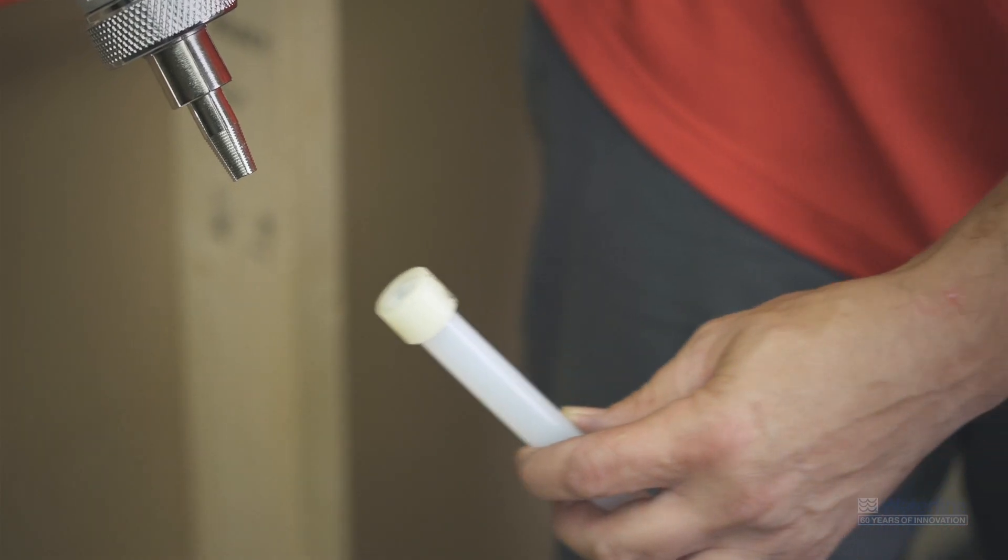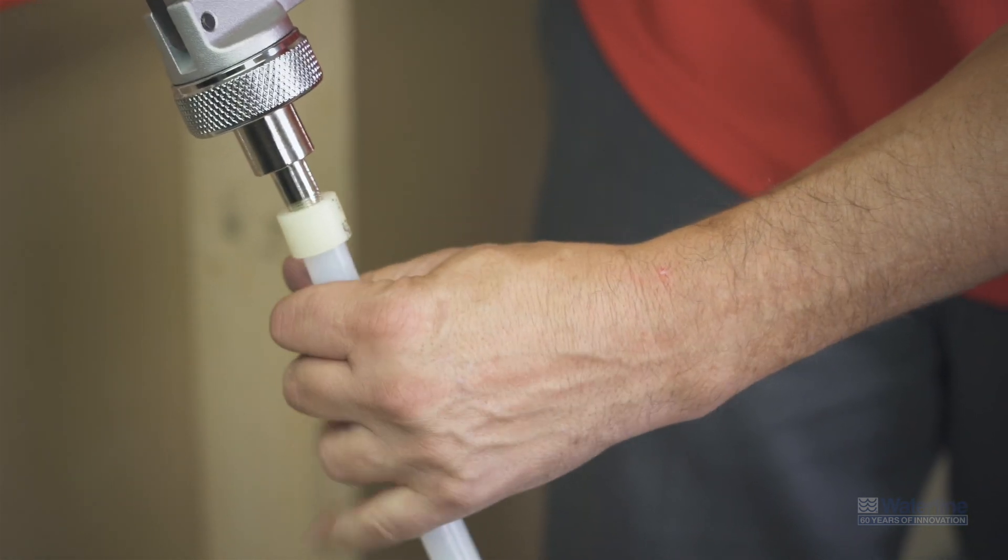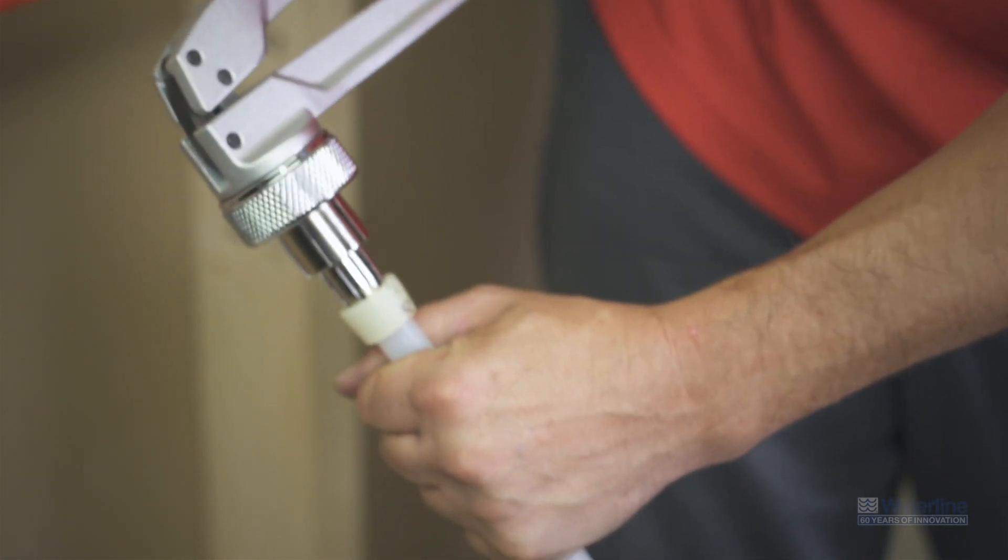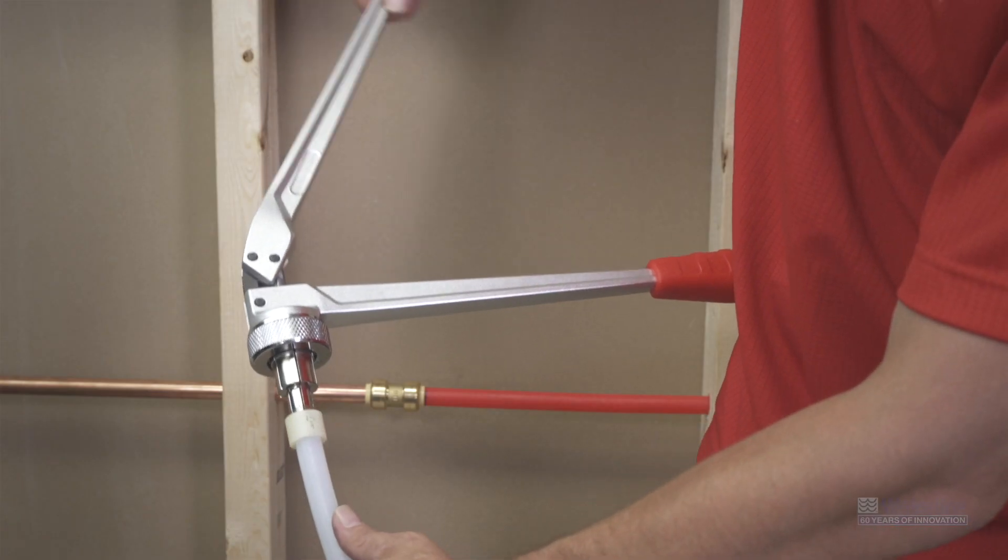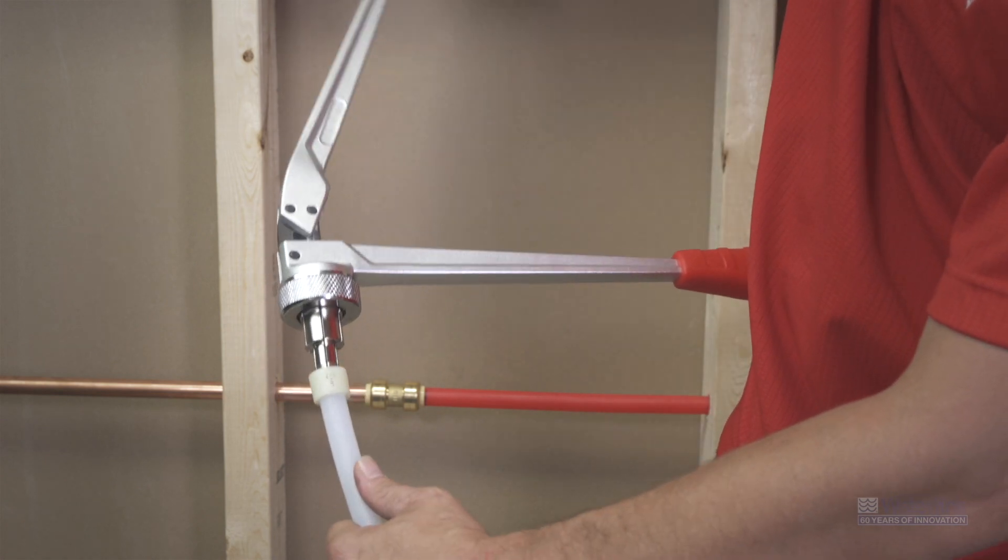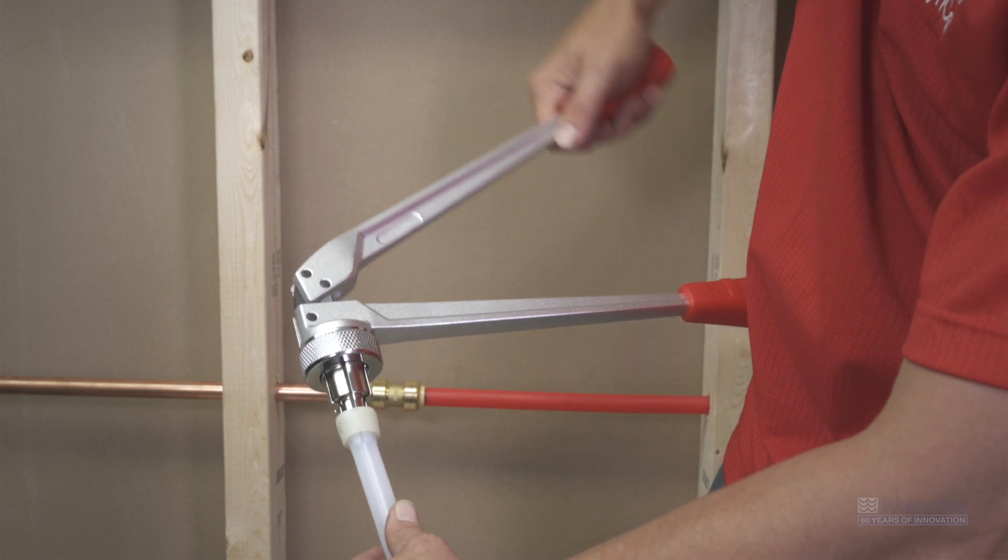Now attach an expander head that corresponds with the size of tubing onto the expansion tool. If you're using a ColdX manual expansion tool, insert the head onto the tubing with the handles of the tool completely open. Squeeze the handles together and repeat each time, rotating the pipe 90 degrees and inserting the head further into the pipe.